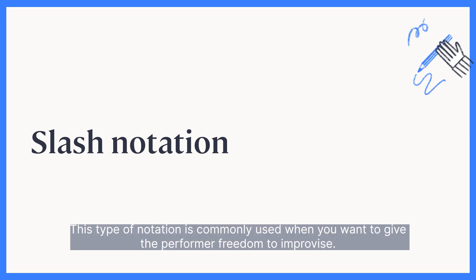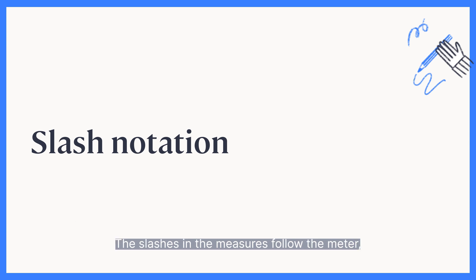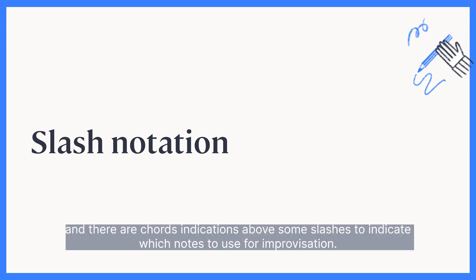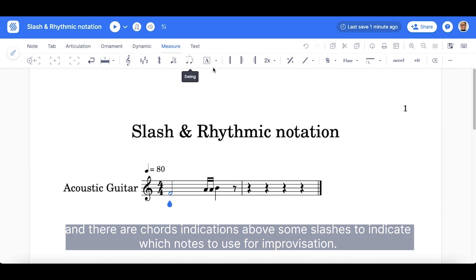This type of notation is commonly used when you want to give the performer freedom to improvise. The slashes in the measures follow the meter, and there are chord indications above some slashes to indicate which notes to use for improvisation.